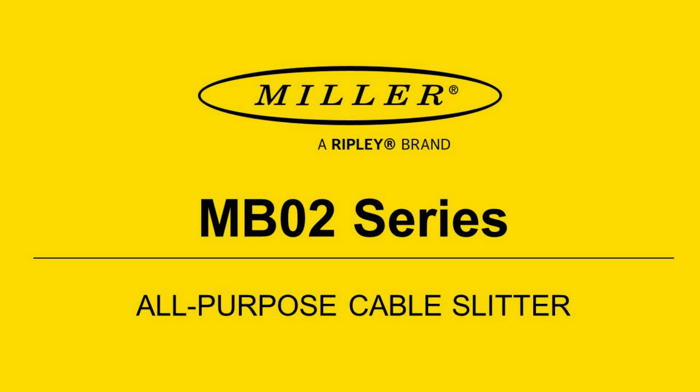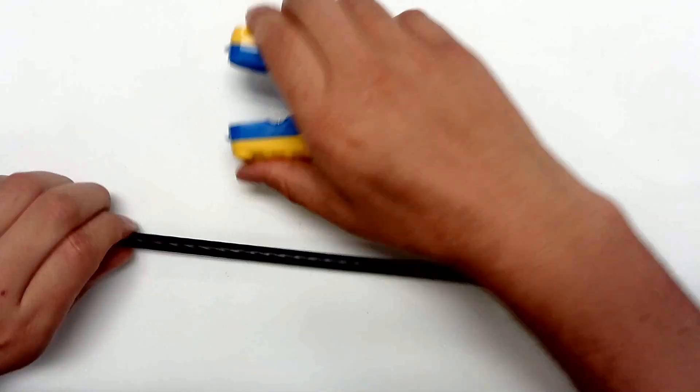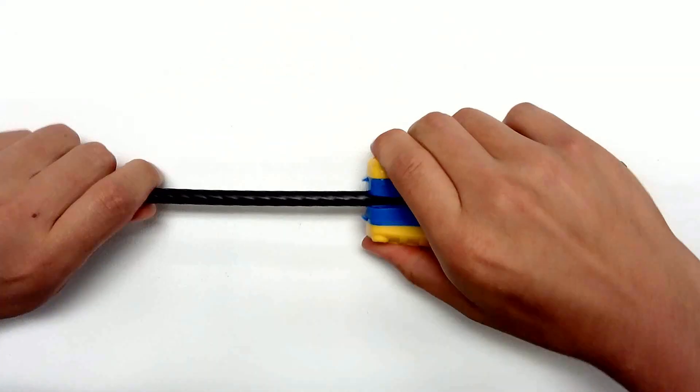Coming to you from Ripley Tools, today we'll show you the Miller MB02 All Purpose Cable Slitter. The Miller MB02 is designed to slit and ring cable jackets up to 20mm in diameter.